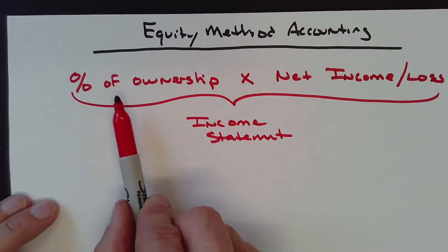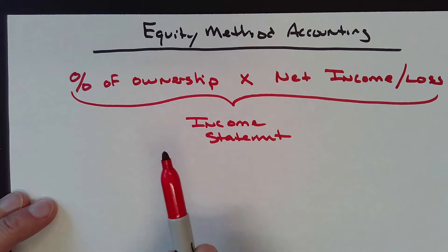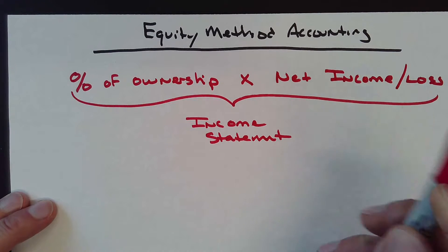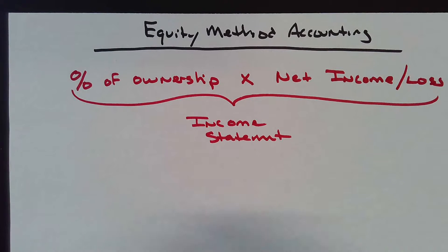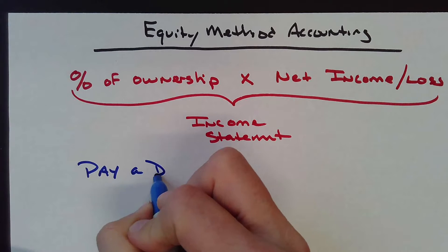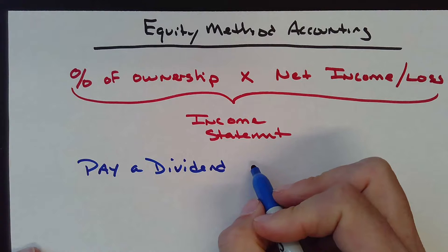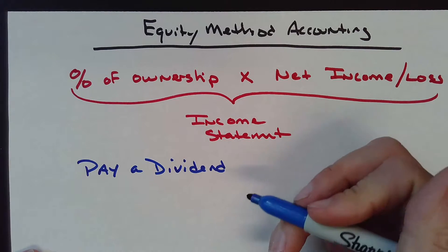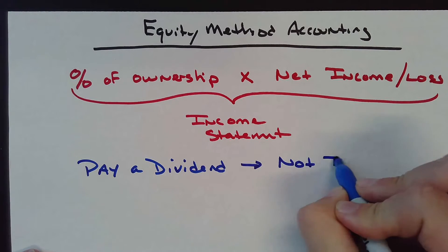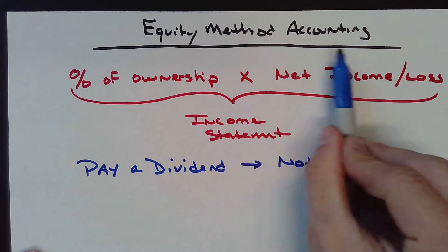With equity method, it's completely different. I take their net income, take my percentage of ownership, and put that on my income statement as loss or income. If they pay me a dividend, I view that as a reduction in my investment, not as income. Dividends are not income under equity method accounting.